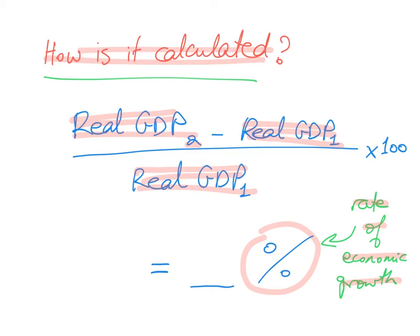If the data given to you is real GDP per capita, it's just the same equation: real GDP per capita 2 minus real GDP per capita 1, divided by real GDP per capita 1, times 100. It's always new minus old, divided by old, times 100, and it gives you a percentage which is the rate of economic growth. Thank you very much ladies and gentlemen.